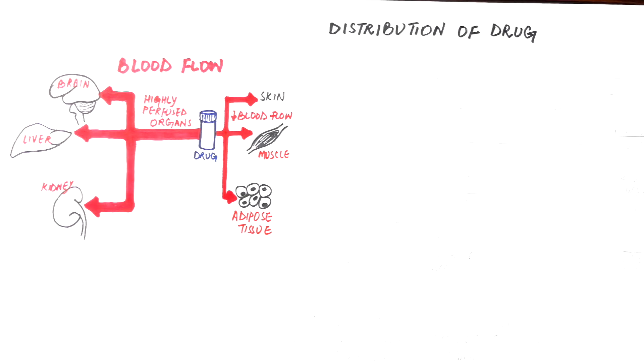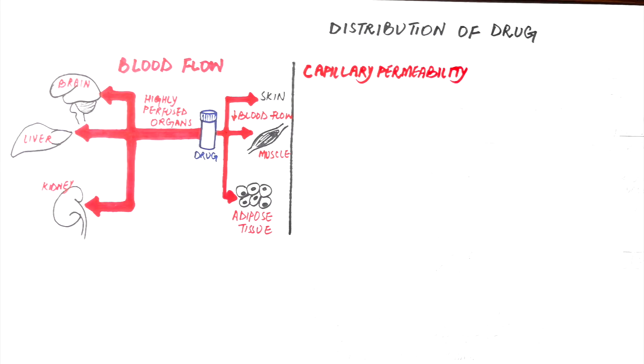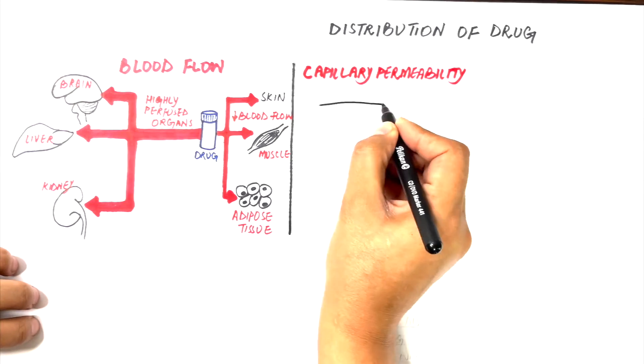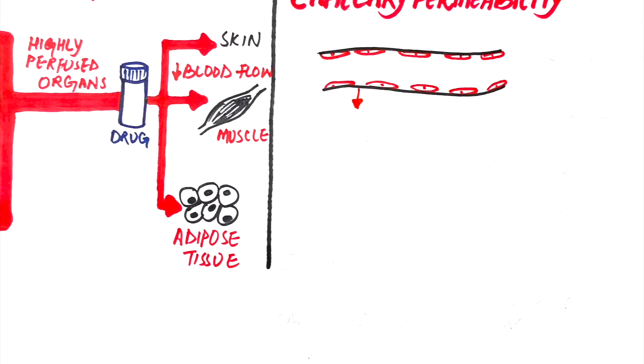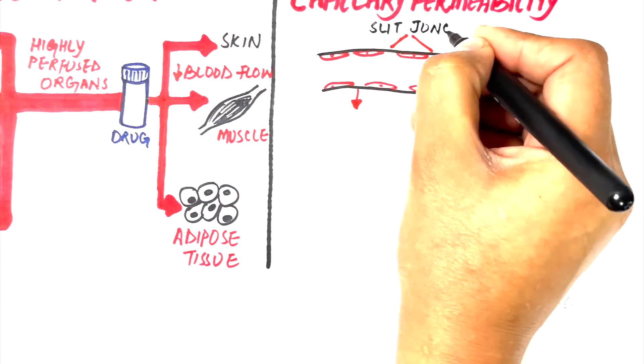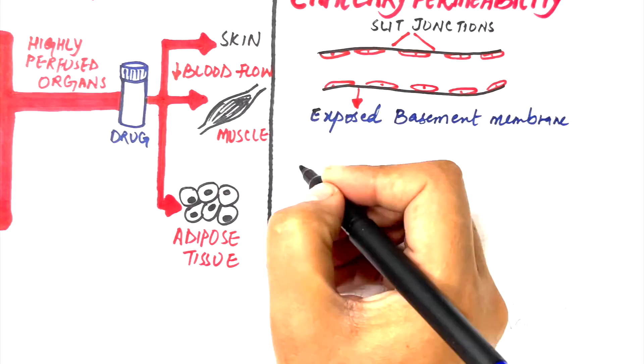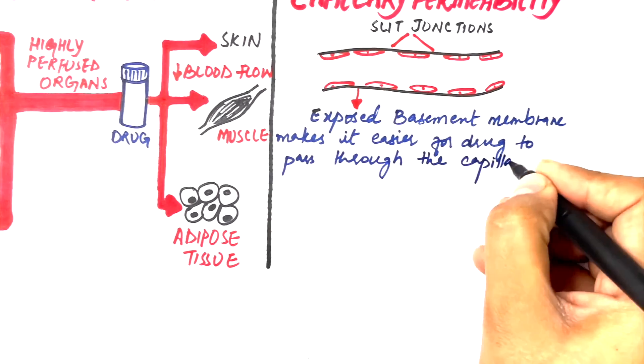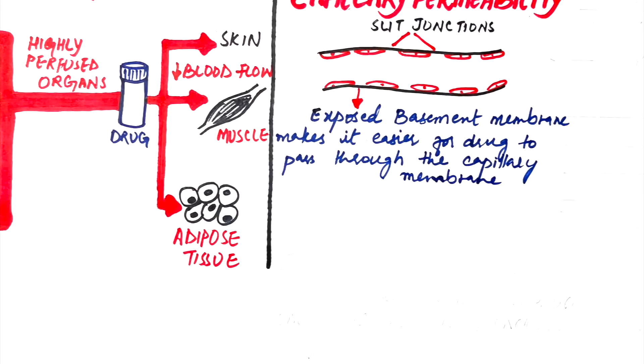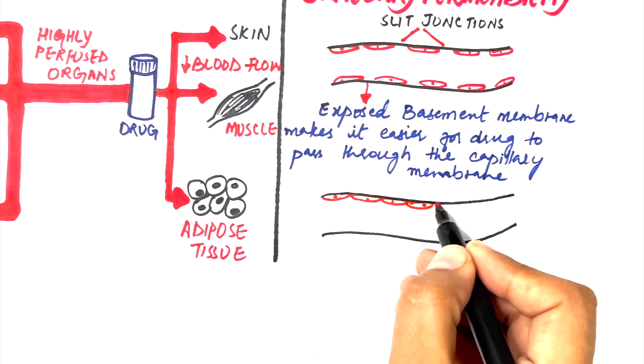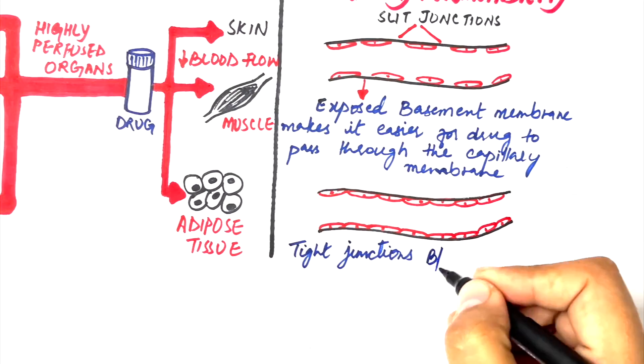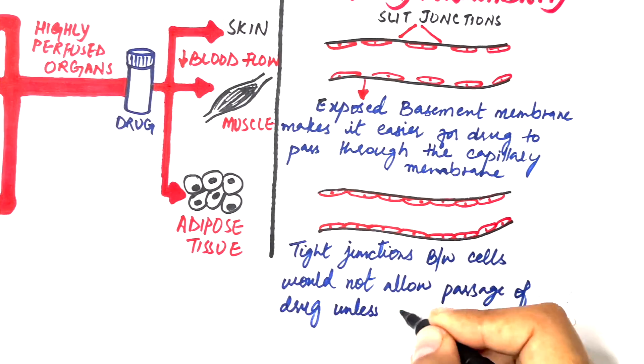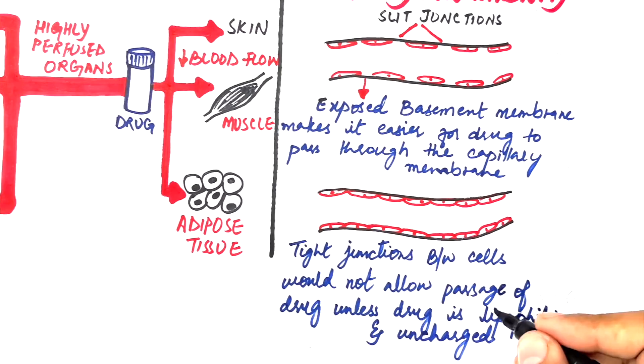The next important factor we should look into is the capillary permeability. The capillary networks in the body are not the same. They differ in their structure throughout the body. We all know that capillaries are made of endothelial cells. So in some areas, these endothelial cells form slit junctions, hence exposing the underlying basement membrane and facilitating passage of drugs through these small intercellular spaces. However, in other areas like brain, these cells of the capillaries make tight contact with each other and do not allow exposure of the basement membrane, hence making it difficult for drugs to pass through it unless the drug is lipophilic and uncharged.